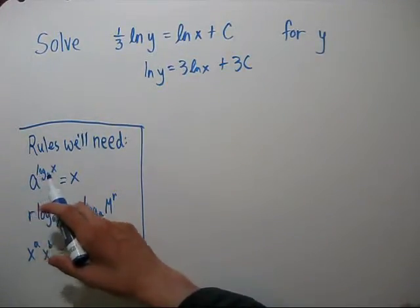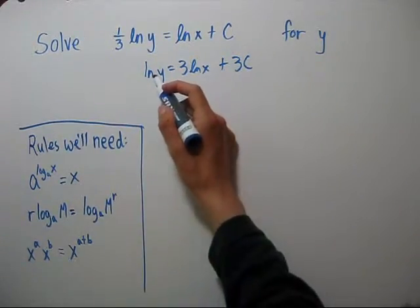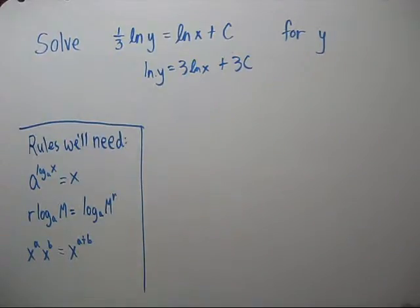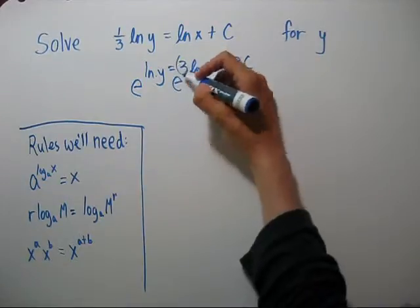We have a to the log base a of x, which equals just x. So our base for natural log is e. We're going to exponentiate both sides of the equation with e as the base.